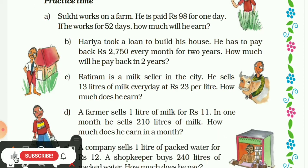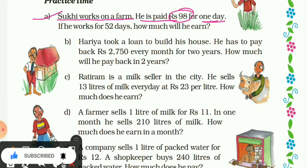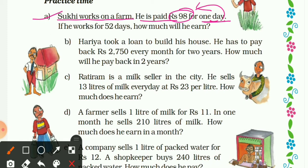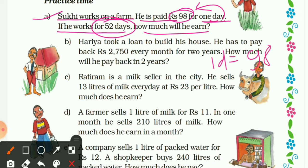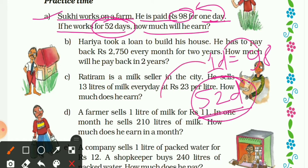Question A: Sookie works on a farm. He is paid 98 rupees for one day. If he works for 52 days, how much will he earn? Here you can make a simple comparison: for one day he gets 98 rupees, and you have to find his salary for 52 days.